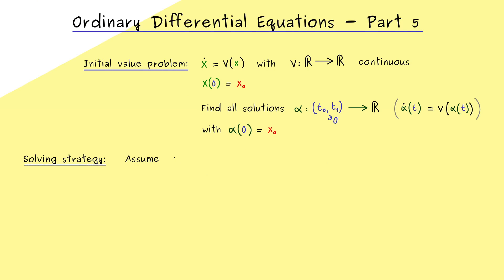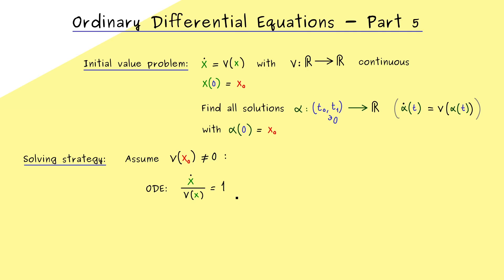Let's first consider the case that v at our value x0 is not 0 — in other words, strictly positive or strictly negative. We take this case because there we can simplify the ODE by dividing by v of x. Hence the ODE now looks like: x dot divided by v of x equals 1. Because v is continuous, this makes sense in the neighborhood around x0, meaning that any zeros of v are far off from x0, so we consider the ODE in this form only around x0.